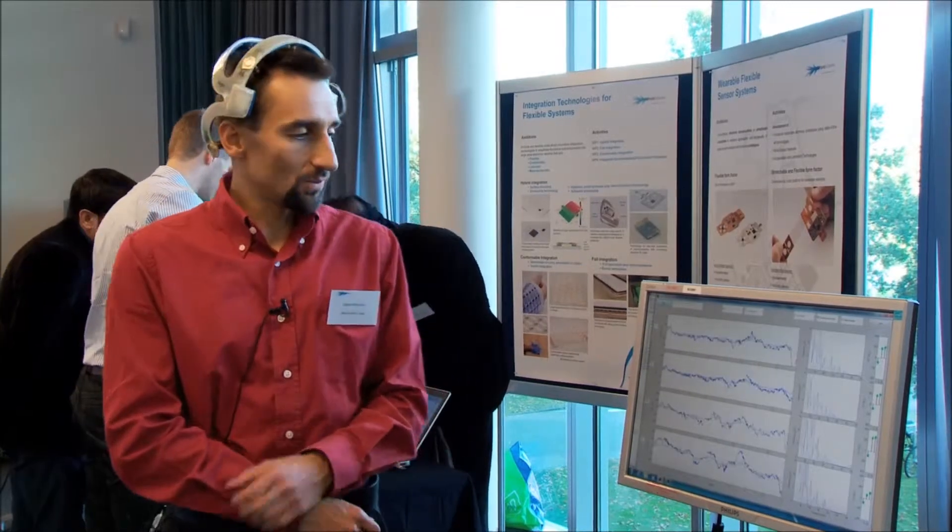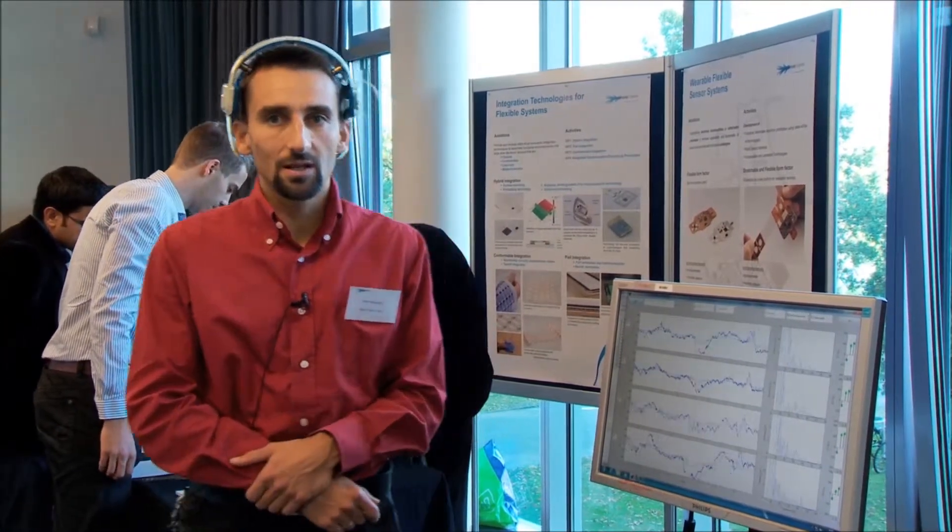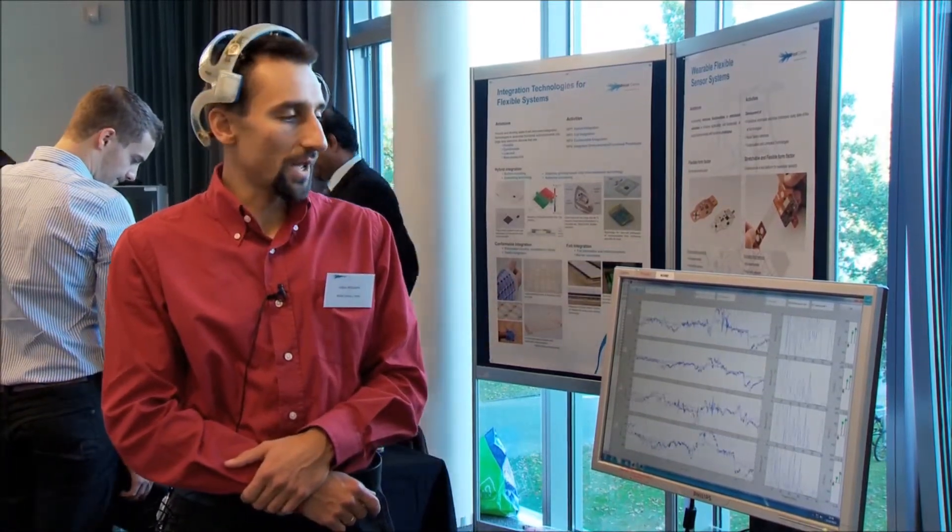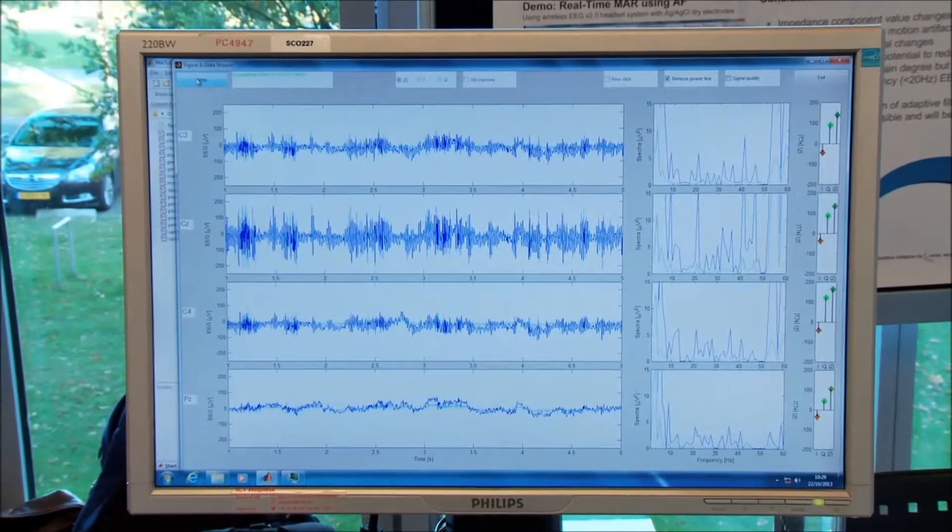So what we are doing here is measuring brain activity, electrical activity of the brain with the latest iMac headset. And what you can see here is the signal coming from the electrodes, so the dry electrodes that are positioned on my head. There are two types of signals that you can see.